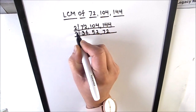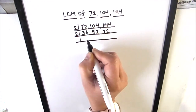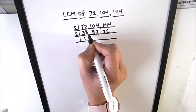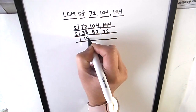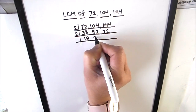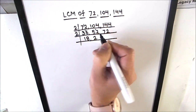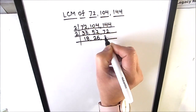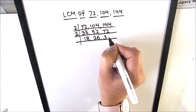Again we are going to use 2 to divide all three numbers. 2 times 1 is 2, 1 is remainder, this becomes 16 — 2 times 8 is 16. 2 times 2 is 4, 1 is remainder, this becomes 12 — 2 times 6 is 12. 2 times 3 is 6, 1 is remainder, this becomes 12 — 2 times 6 is 12.